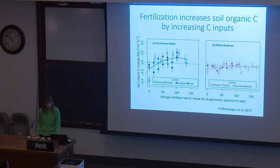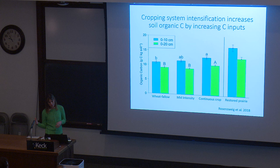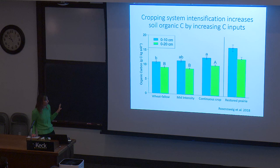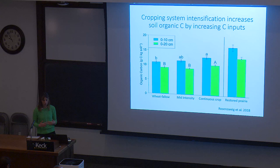Cropping system intensification, especially in drier regions where fallow is used to conserve soil moisture, can really increase soil carbon by adding more carbon through plant production. In a study in Colorado across many different farms, wheat grown once every two years — the standard rotation — resulted in the lowest soil carbon. Decreasing the frequency of fallow and increasing the number of crops grown per year leads to more carbon inputs and higher carbon stocks.